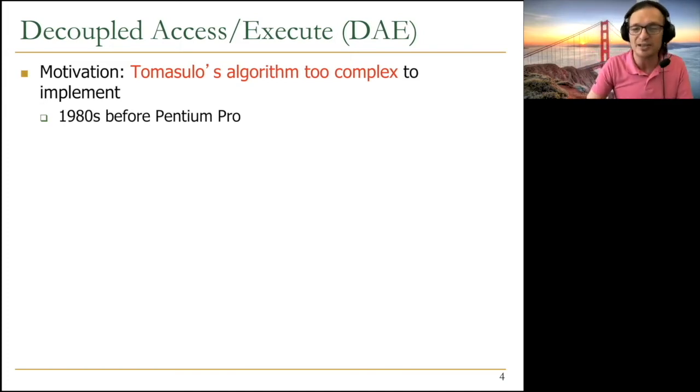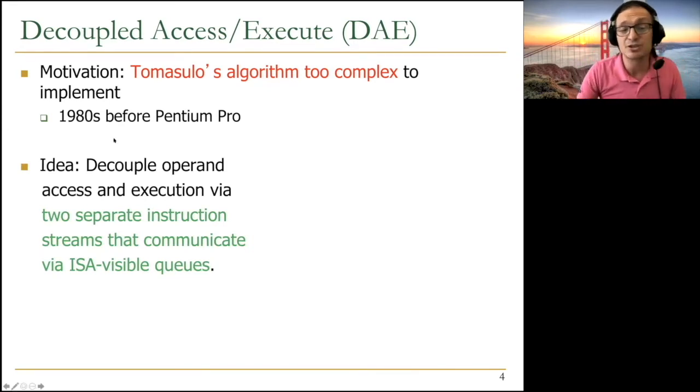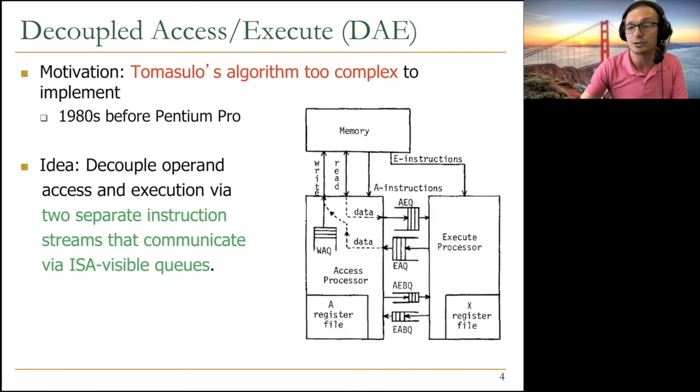DAE has a very similar philosophy, but it doesn't go all the way into hardware extremely simple. We're going to see that it's going to change the hardware. The idea is to decouple operand access or memory access versus execution computation via two separate instruction streams that communicate through ISA visible queues. That's the basic idea. You look at a decoupled access execute system. You have an access processor and execute processor.